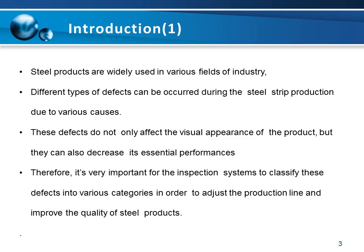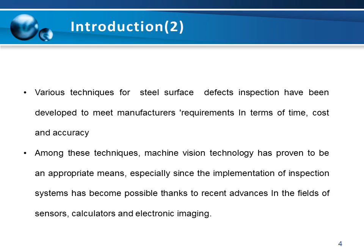Such properties include corrosion resistance, abrasive resistance, and fatigue strength. Therefore, it is very important for automated inspection systems to classify those defects into various categories in order to adjust the production line and improve the quality of steel products. Various techniques for steel surface defects inspection have been developed to meet manufacturer requirements in terms of time, cost, and accuracy.